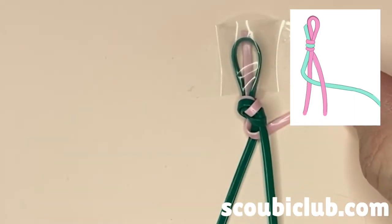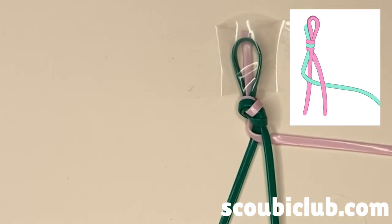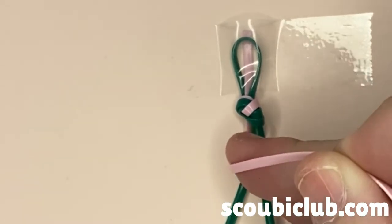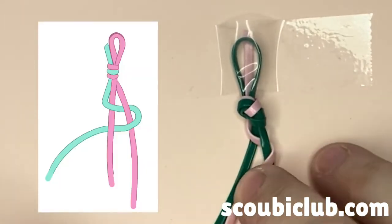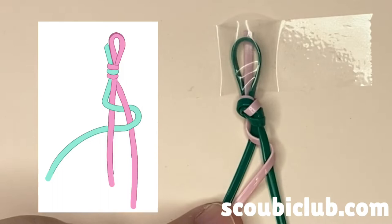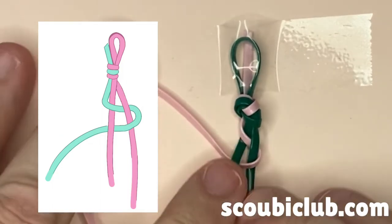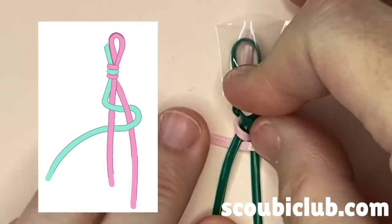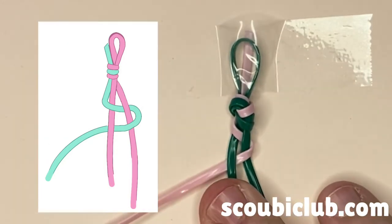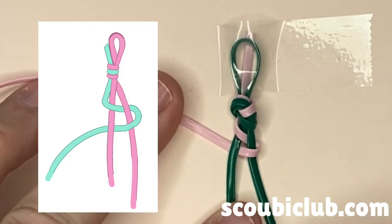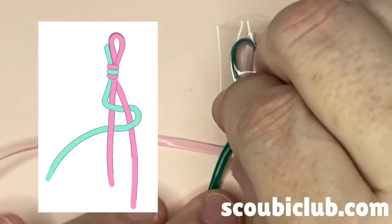Now we'll do the same thing going the other direction. So fold over the first one and under the second one. If you want to leave it zigzag, you can. I want it to look like a zipper, so I'm going to scrunch it up so that the long strand is horizontal.